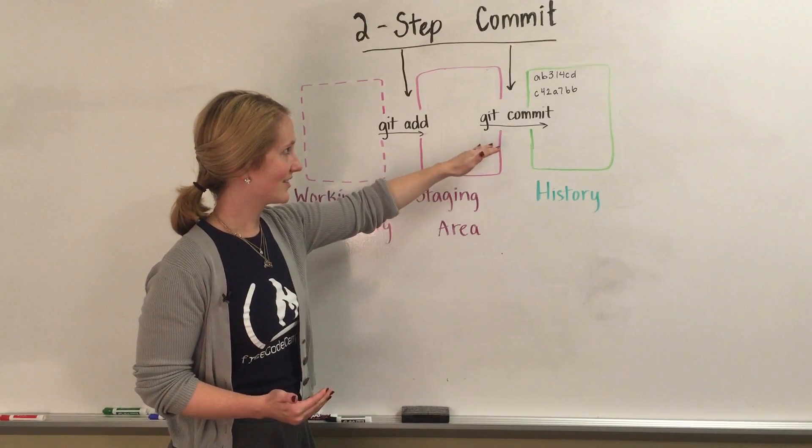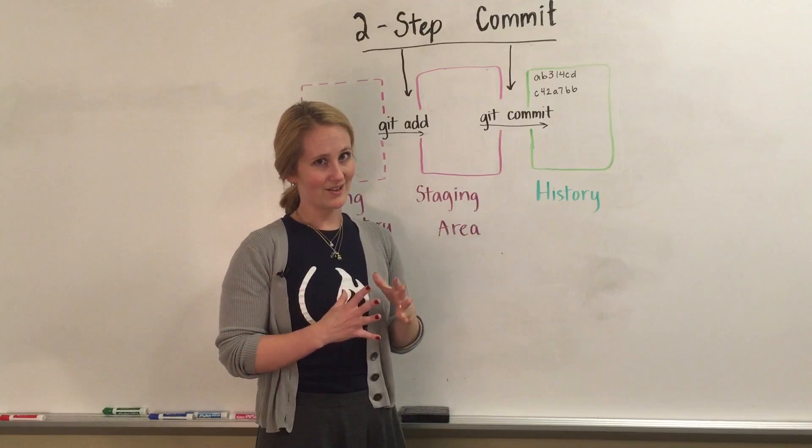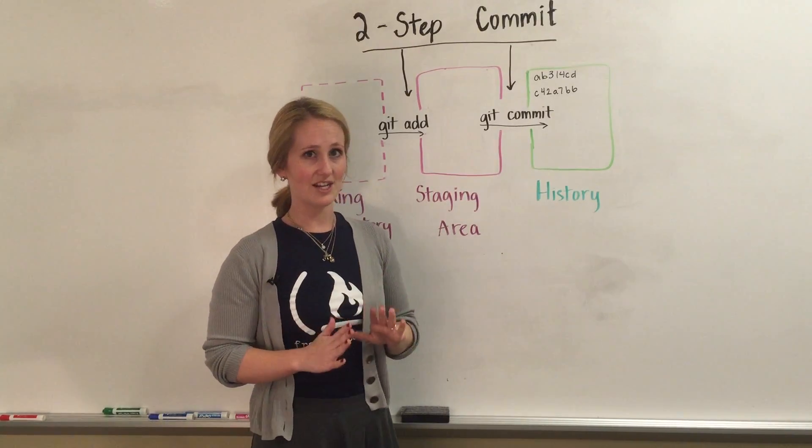Once you run git commit, then all of those files, that snapshot of the repository including your changes, are stored with that 40 character SHA-1 hash in history.